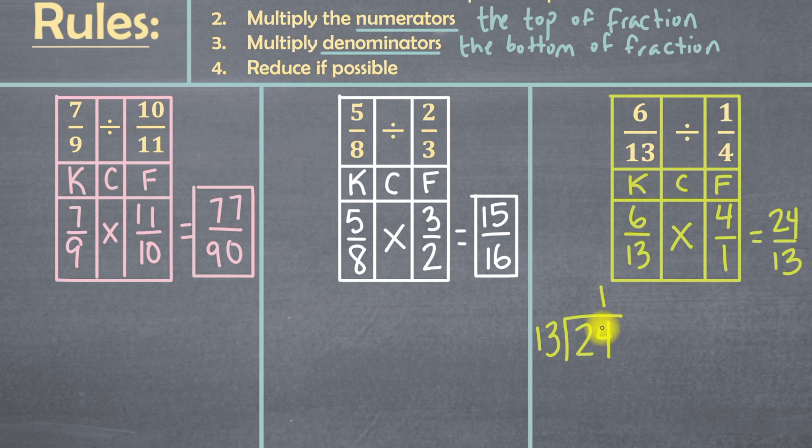That would be 1 whole time. And 1 times 13 is 13. And when I subtract 4 minus 3, I get 1. And 2 minus 1 is 1. This means my remainder is 11. So my final answer is going to be a mixed number, where I have my whole number is this answer here. My numerator is my remainder, 11. And my denominator is my divisor, 13. So therefore, the final answer, or the quotient, of 6 over 13 divided by 1 over 4 is 1 and 11 over 13.